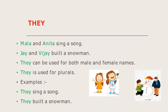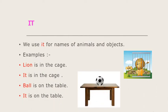They sing a song. Same with the next sentence — Jay and Vijay built a snowman. Instead of Jay and Vijay, we are using 'they.' They built a snowman. They is used for plurals — it is very important that they is used for plurals. Next is 'it.' We use 'it' for names of animals and objects.